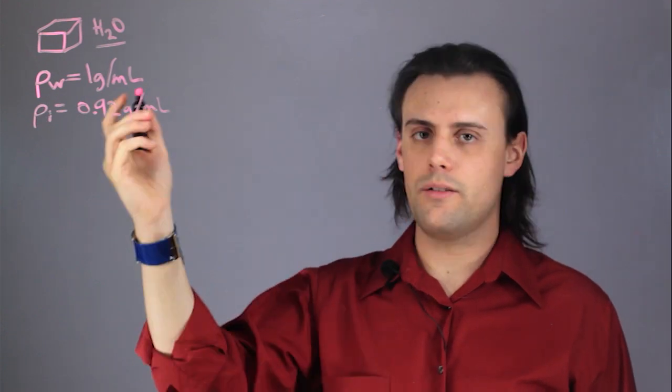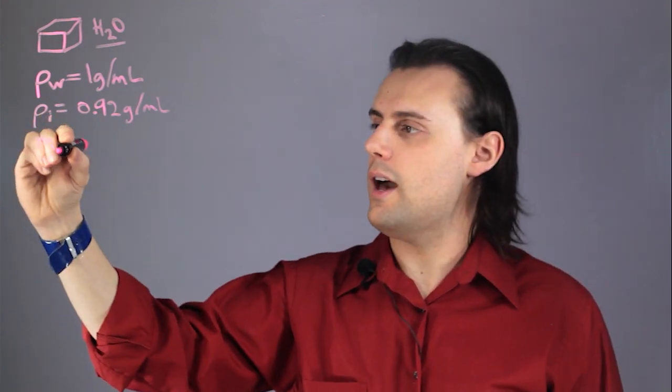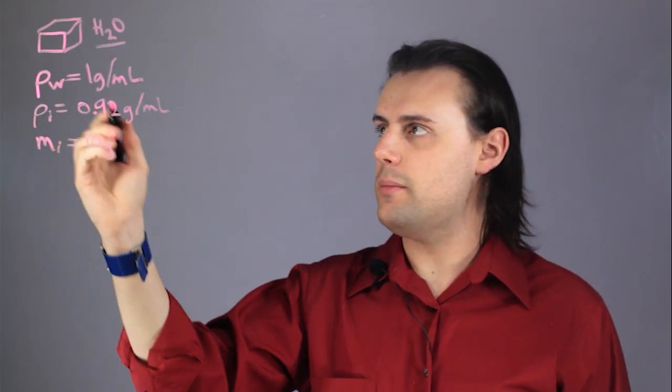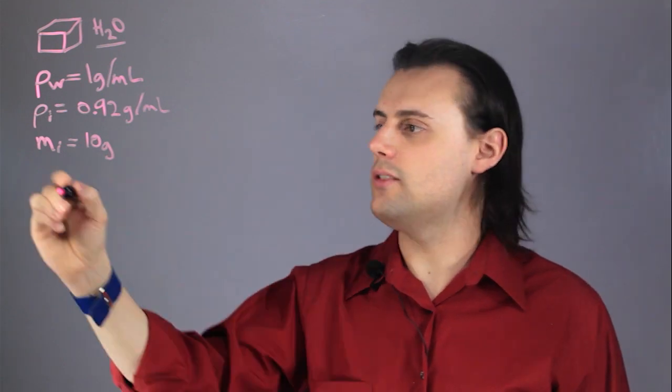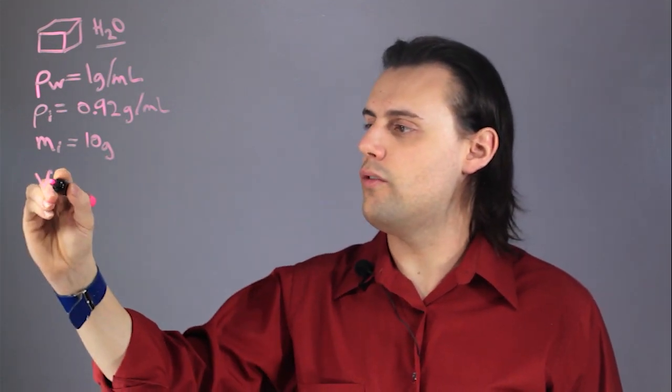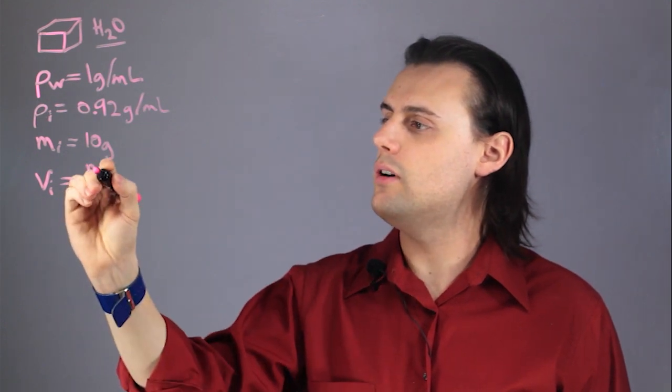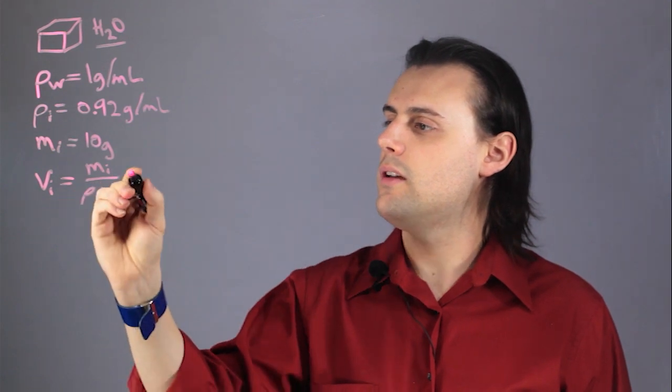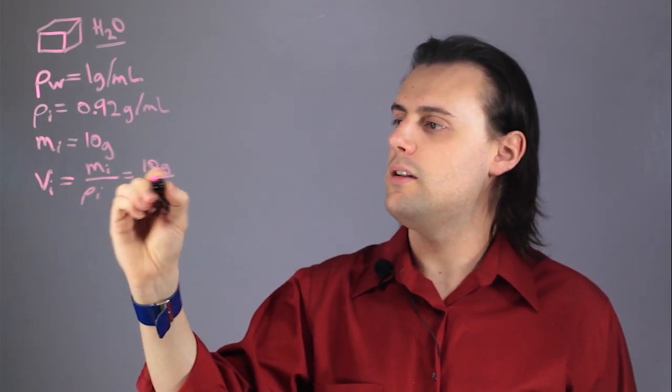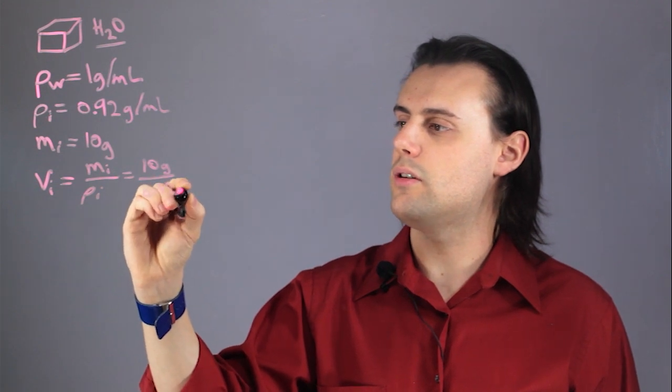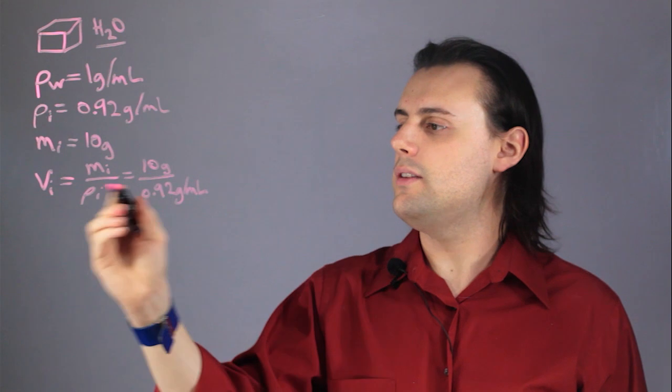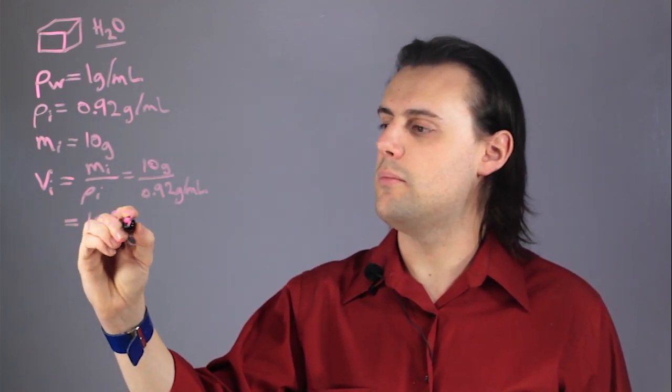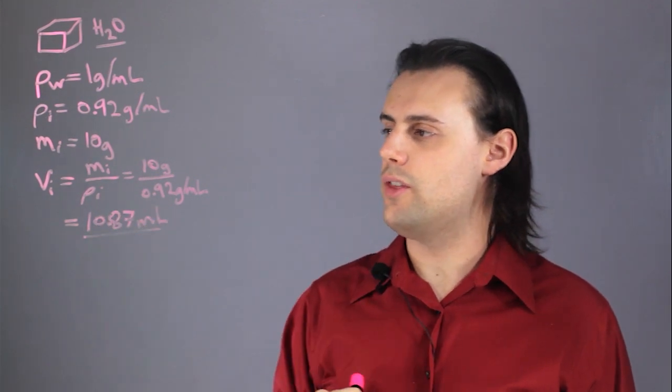So, if I consider a block of ice that has 10 grams of mass, then I can determine how much volume it takes up before I melt it. So, the volume of the ice is going to be equal to the mass of the ice divided by the density of the ice, which is going to be equal to 10 grams divided by 0.92 grams per milliliter. And this is going to be approximately equal to 10.87 milliliters. So, I start off with this volume.